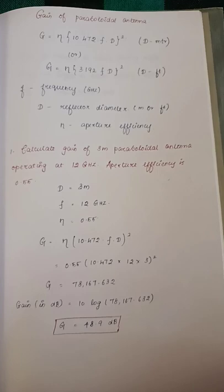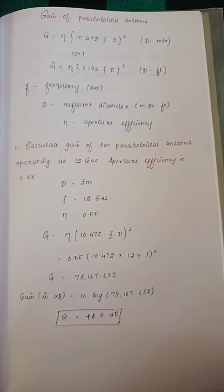This is an example problem. D is 3 meters, F is 12 gigahertz, Eta is 0.55.